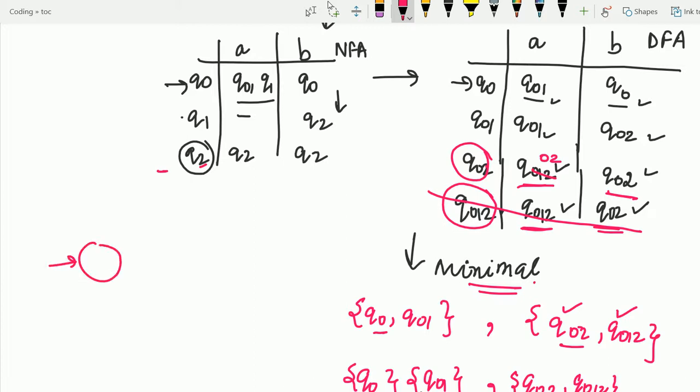As Q0. Q01. And Q02. With Q0 as initial state. Q0 on A. Going to. Q01. Q0 on B. Going to. Q0 itself. And.